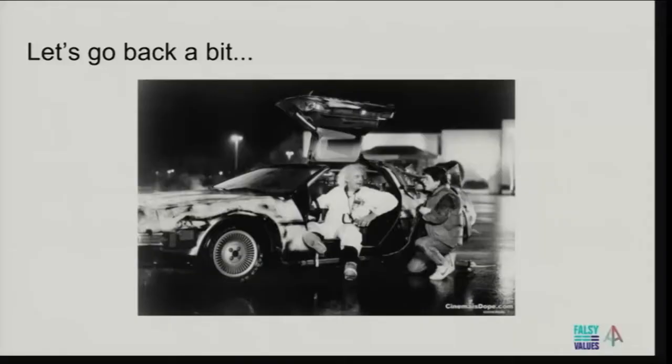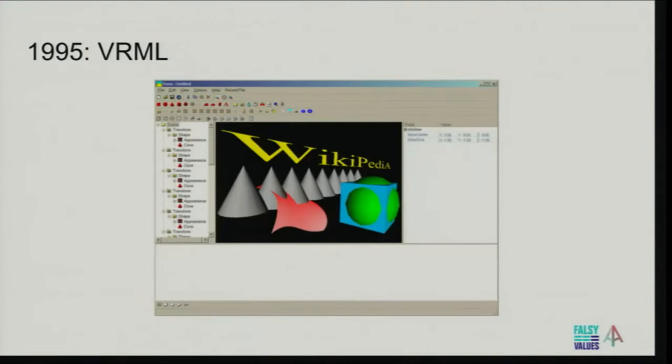Today we're going to learn a bit about how we make 3D happen on the web. Let's go back into the history because it's quite interesting. 3D on the web sounds really new, but actually it isn't. In 1995 we had VRML — that was a clusterfuck and was really bad. It was a lot of XML, very proprietary, you had to have specific tools to edit it, so that didn't really fly.